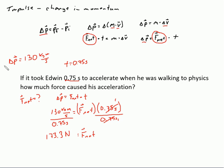We'll look at the units and make sure. So we have kilogram meters per second divided by seconds, which gives me kilogram meters per second times the reciprocal, one over seconds. That gives me a kilogram meter per second squared, and that is definitely a newton. So Edwin's net force that acted on him to cause him to accelerate and have this impulse of 130 kilogram meters per second was 173.3 newtons.